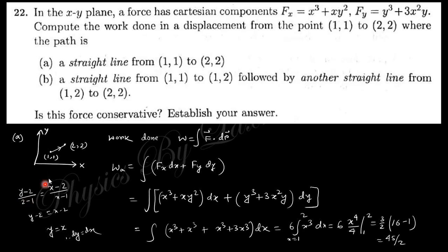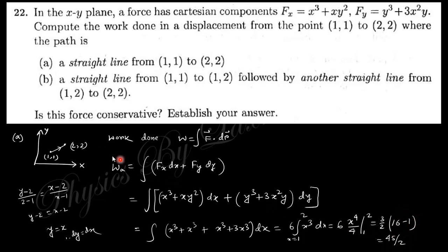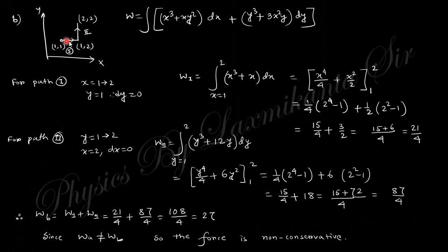For the straight path from (1,1) to (2,2), the equation of the line is y = x, so dy = dx. Substituting all y in terms of x and dy in terms of dx simplifies the integrand to 6x², and integrating gives 6x⁴/4 from 1 to 2, which evaluates to 45/2 as the work done along the straight path.